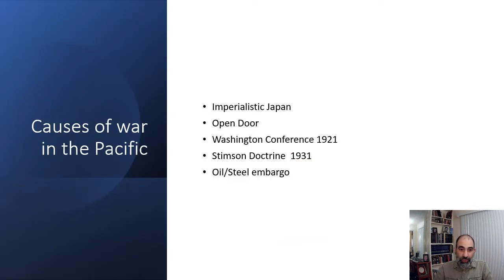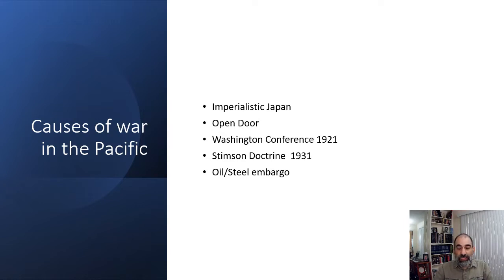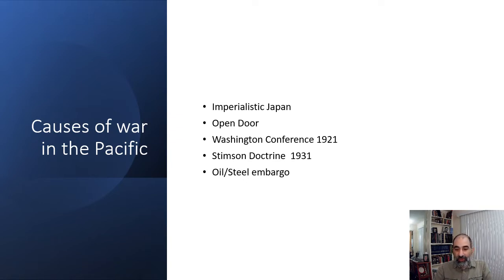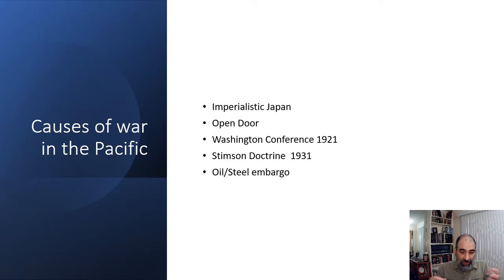There were other things that made Japan attack Pearl Harbor. Japan resented the open-door policy — this idea of opening up markets in China and other places in Asia. Japan wanted to control all those things and didn't want America, the British, or anybody else in their sphere of influence. The Washington Conference back in 1921 also upset Japan because it reinforced the open-door policy and placed a limit on the number of naval ships Japan could build.